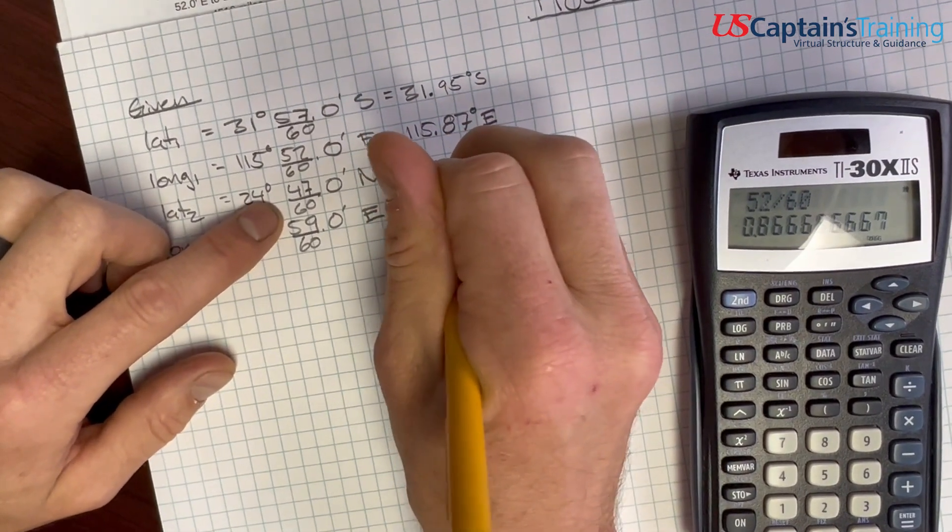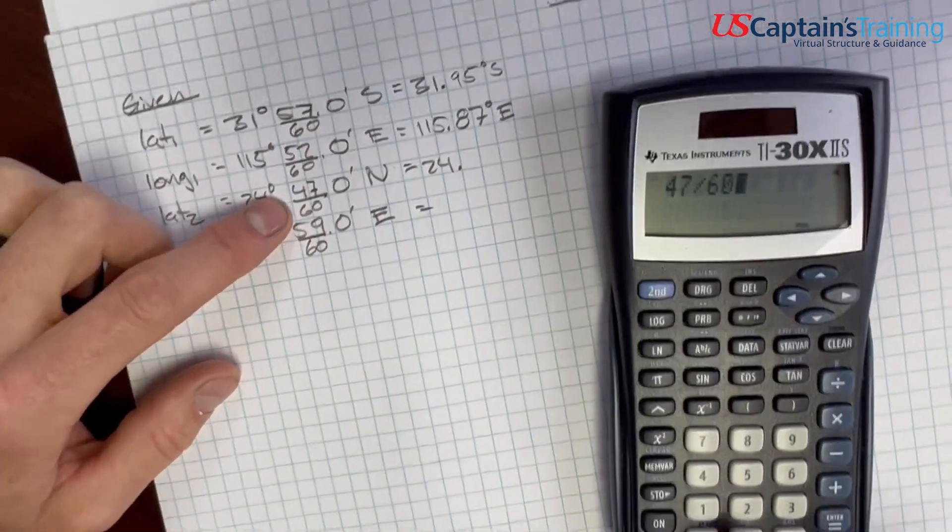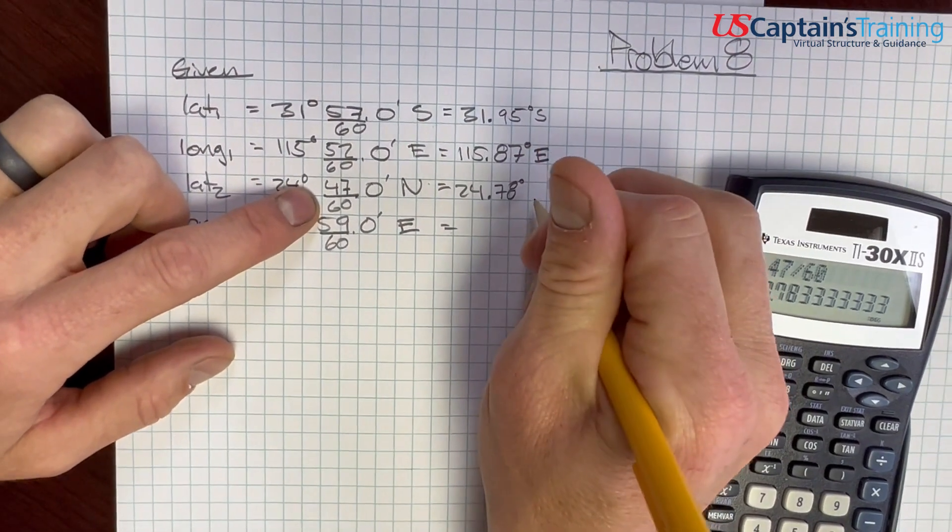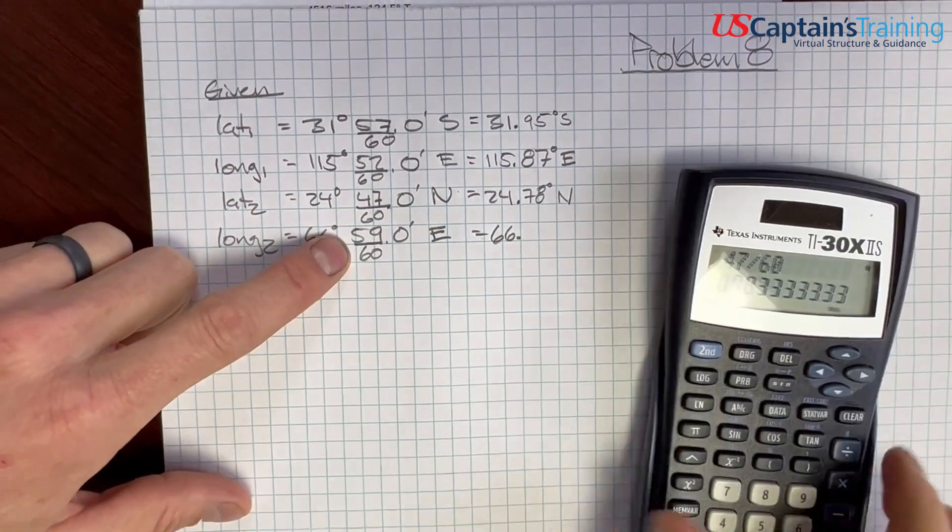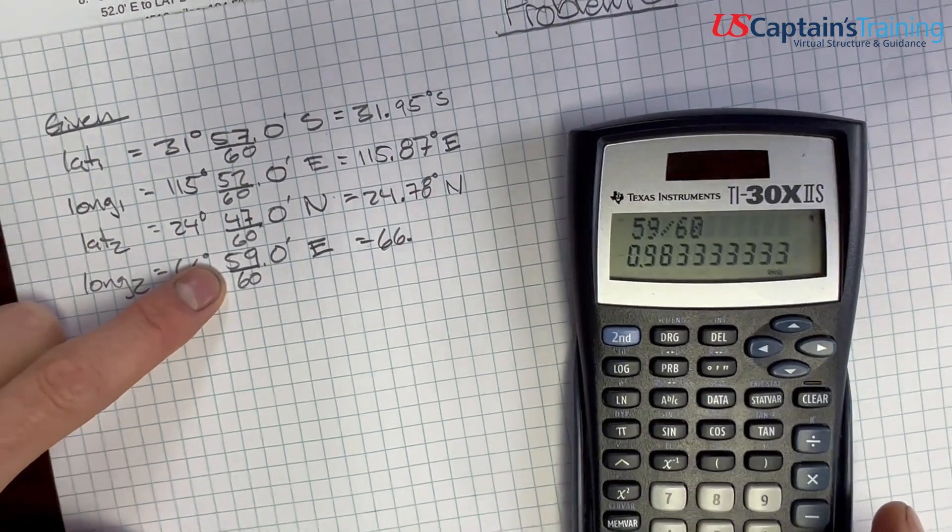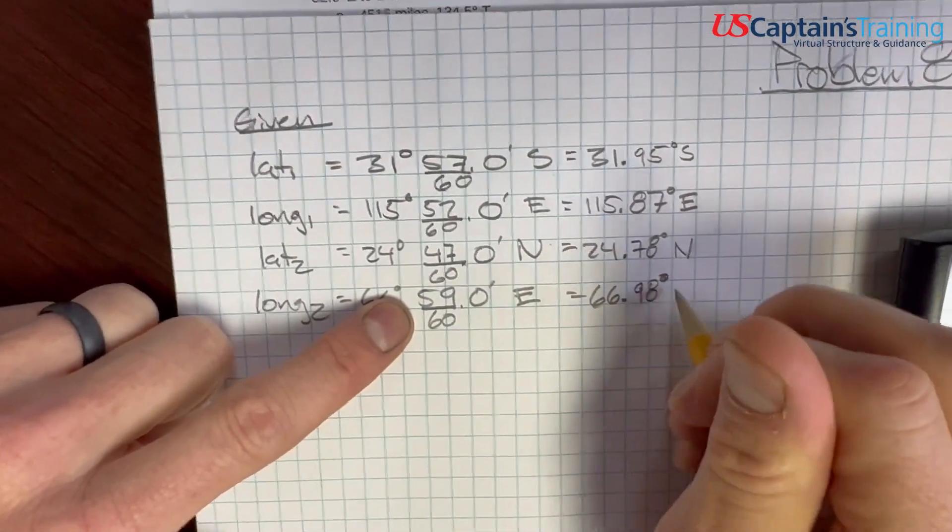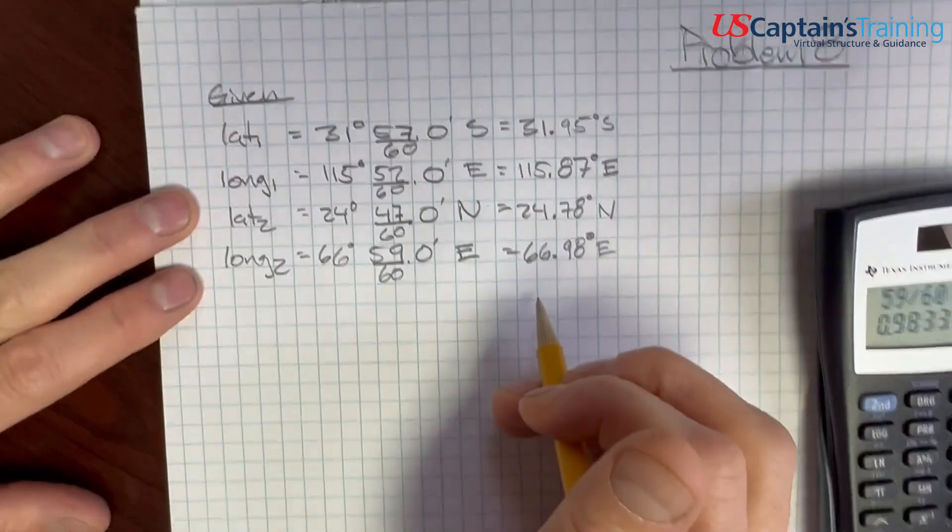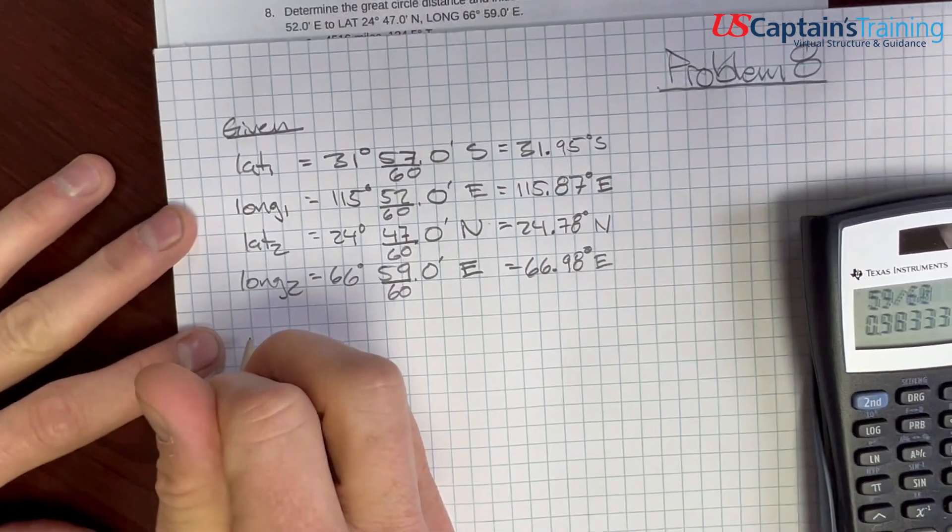And now we have 24.47 divided by 60, enter, 78, so 24.78 degrees north. And this one is 66.59 divided by 60, enter, 98, so 66.98 degrees east. All right, now we have all of our lats and longs in only degrees. And we need to find D-low.